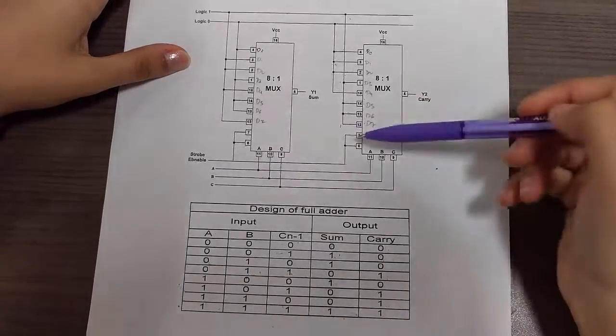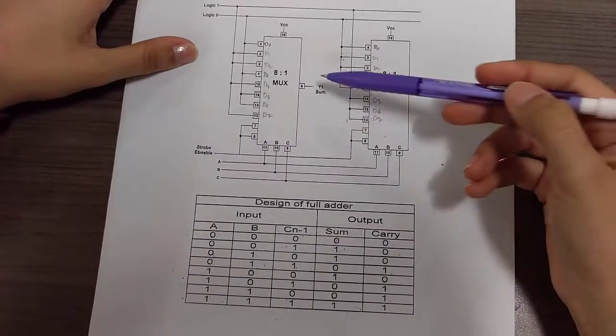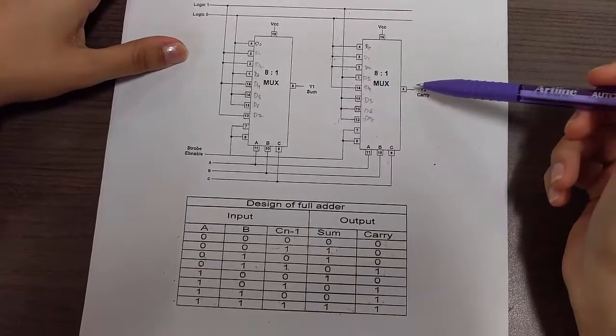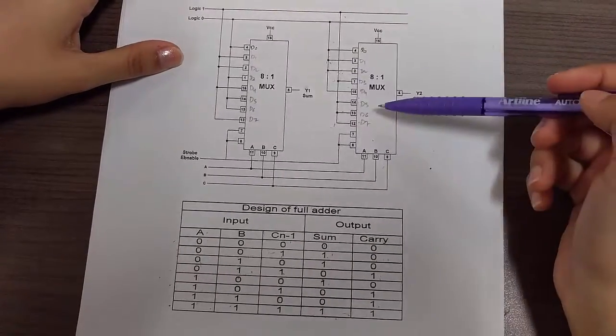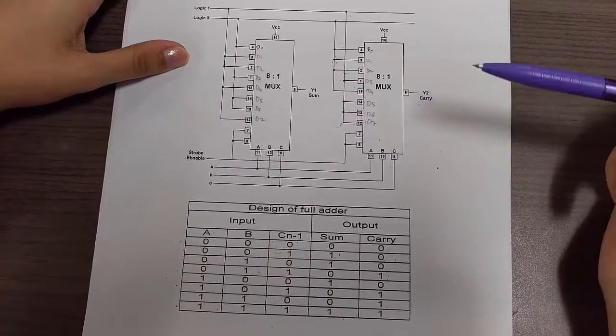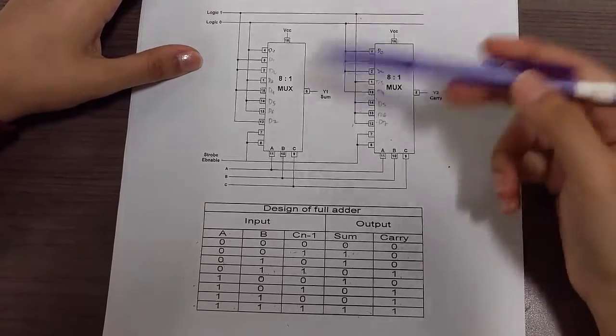Pin number 7 and 8 are shorted together and grounded. The output is taken from pin number 5 from both ICs, which gives sum and carry. Let's implement the circuit as shown here.